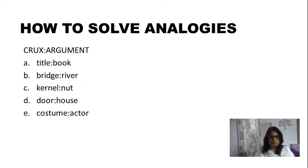The first one is crux is to argument. Let's solve this. The options that we have are title is to book, bridge is to river, kernel is to nut, door is to house, and costume is to actor. Now before actually solving any analogy you need to take into account a very important thing.